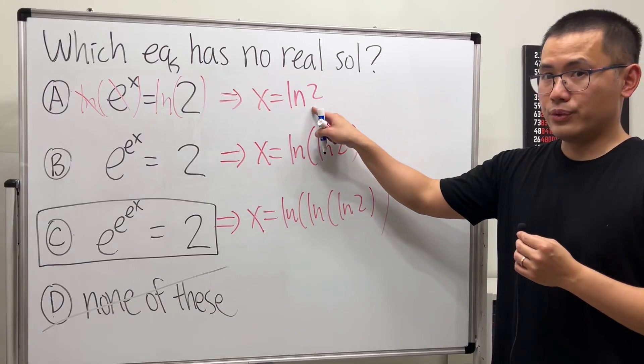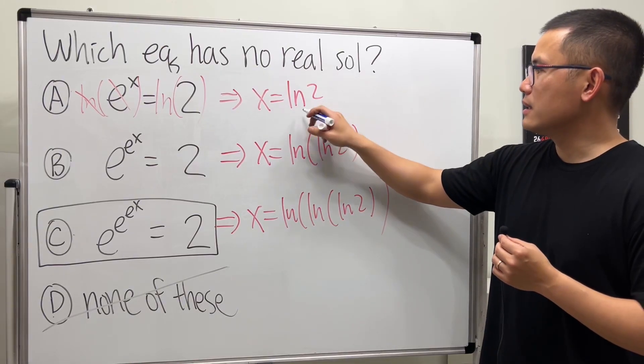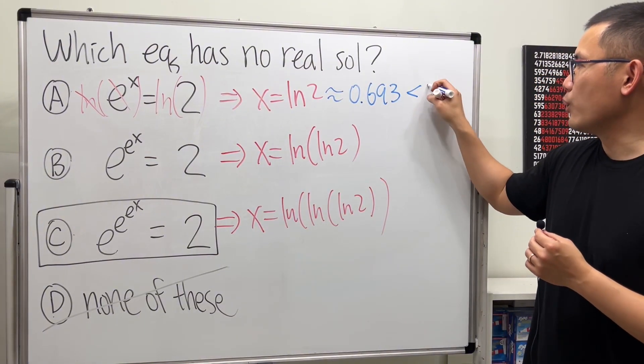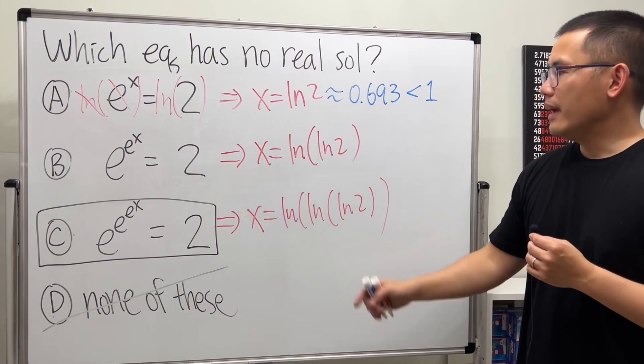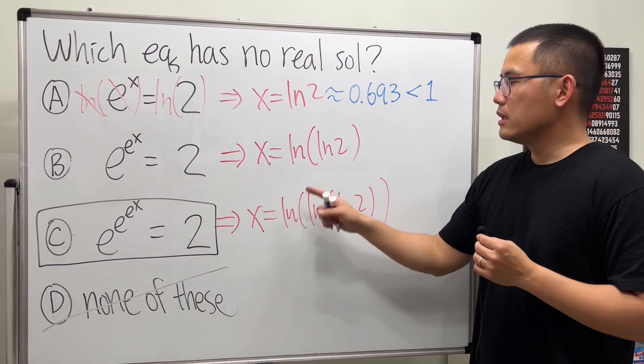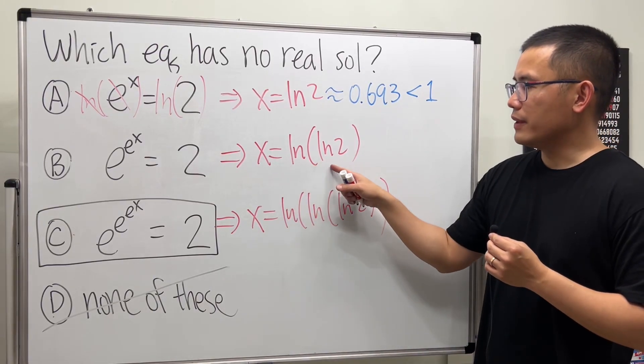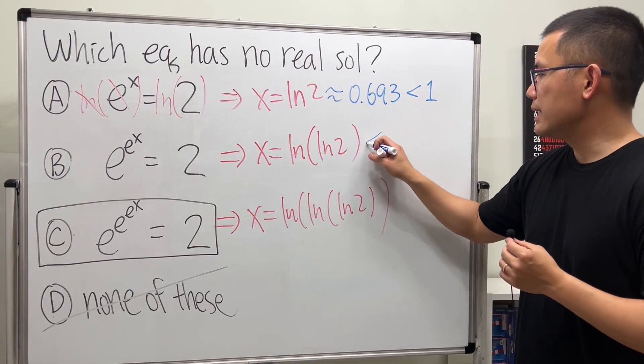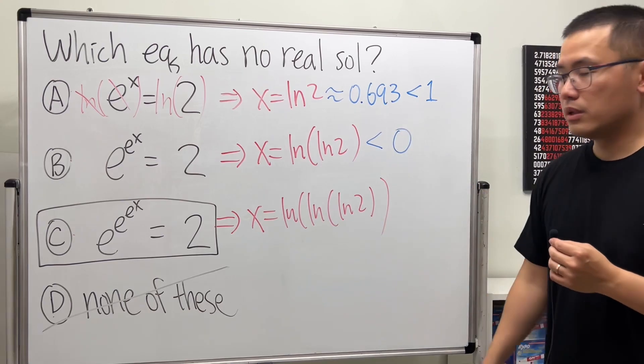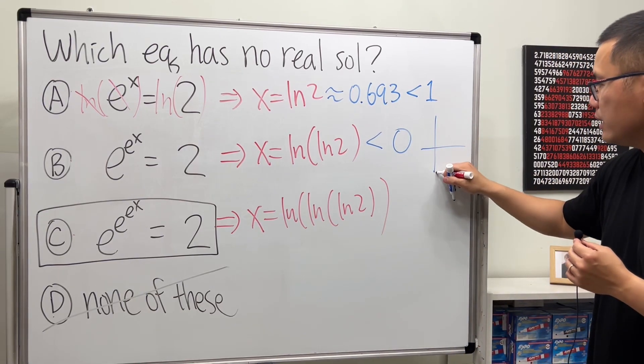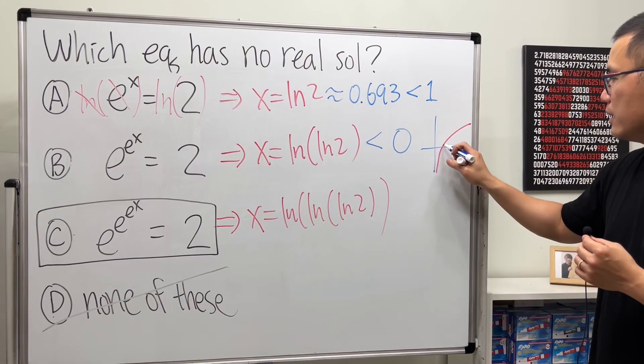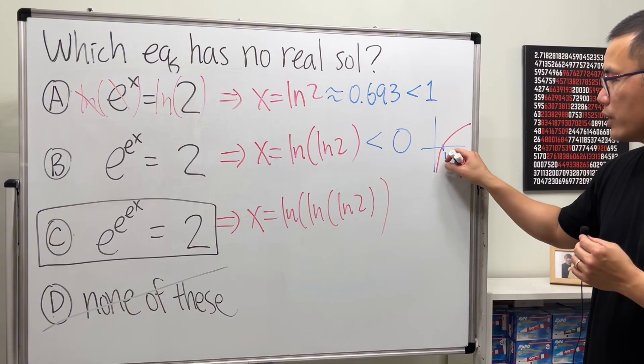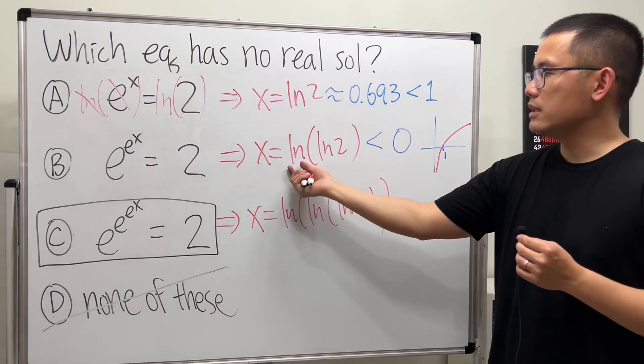Firstly, though, when we do ln(2), this right here is about 0.693, which is less than 1. And when we do it again, well, if we have ln of a number that's in between 0 and 1, this thing is going to be less than 0. Why? Because you can take a look at the graph real quick. Here is 1, and here is 0. Anything in between 0 and 1 will get a negative output after this ln.